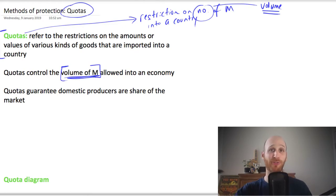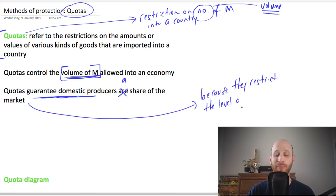So quotas are a really strong form of protection because they're saying we're only going to allow X number of imported products into our economy. And so what they do is they actually guarantee domestic producers a share of the market. And that's because quotas restrict the level of foreign competition. If I set the quota really low and only let in a couple, then I'm really favoring or prioritizing domestic producers.